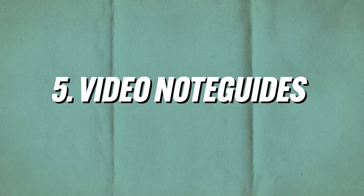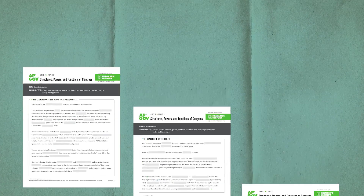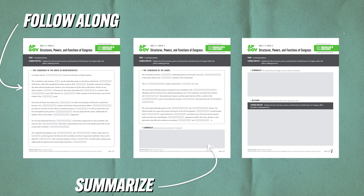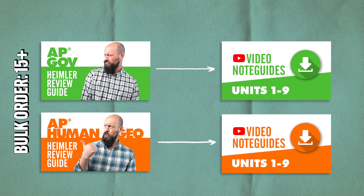I've created note guides that follow along with my scripts for every topic video I've created. And if you haven't cracked the code on how to get the course content into your students' brain folds because they just won't read, I think these might be the answer. With these guides, students can follow along with my videos, fill in the blanks with important vocabulary, summarize each section in their own words, and get practice composing theses based on that content. So while I'm developing worksheets for Gov and Human Geography, if you place a bulk order for the Heimler Review Guide, I'll give you the video note guides for free. All the links are below.